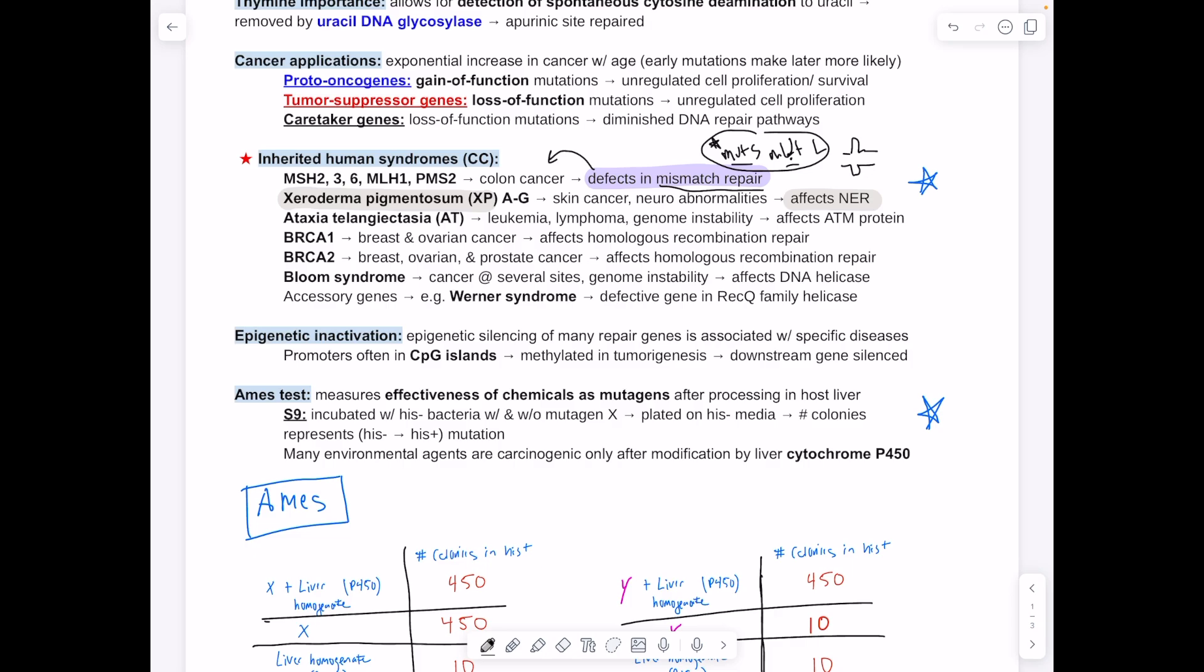You have xeroderma pigmentosum, which results in skin cancer. It affects nucleotide excision repair, which is easy to remember because this uses XP proteins. Nucleotide excision repair uses XP proteins to do the cutting and recruiting of polymerases to repair the nucleotides.